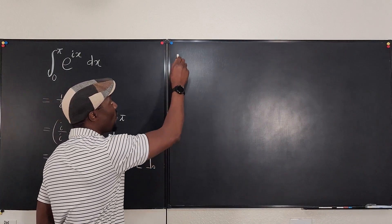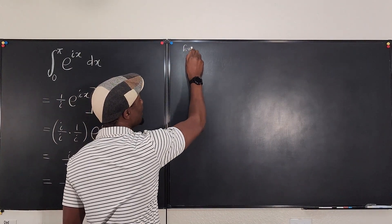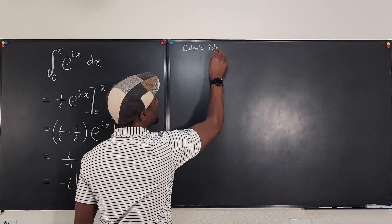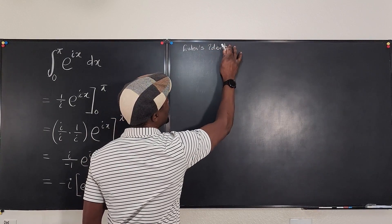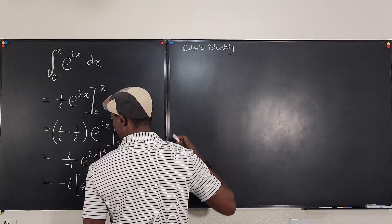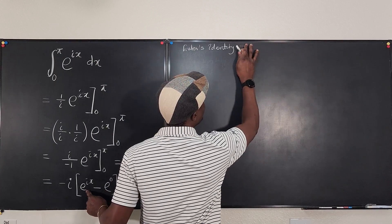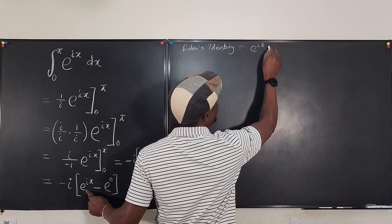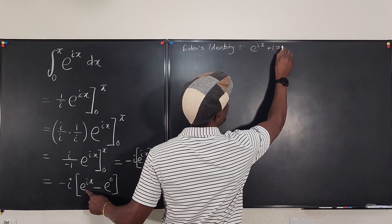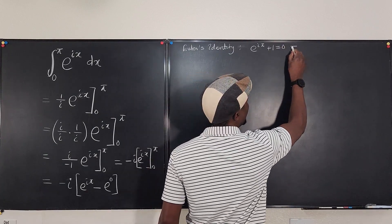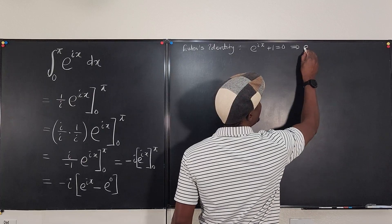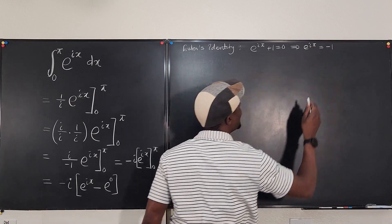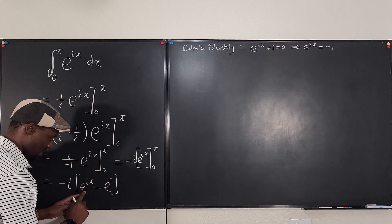Remember Euler's identity! It states that e to the i·pi plus one equals zero, which implies that e to the i·pi equals negative one.